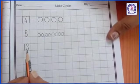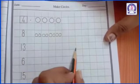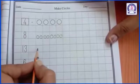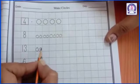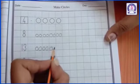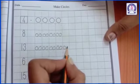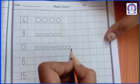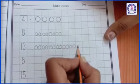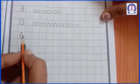Next, 1, 3 - 13. We have to make 13 circles. 1, 2, 3, 4, 5, 6, 7, 8, 9, 10, 11, 12, 13.